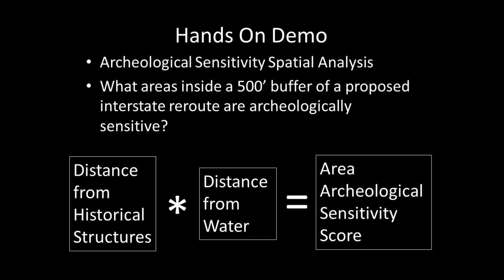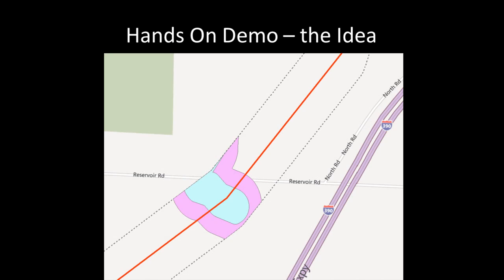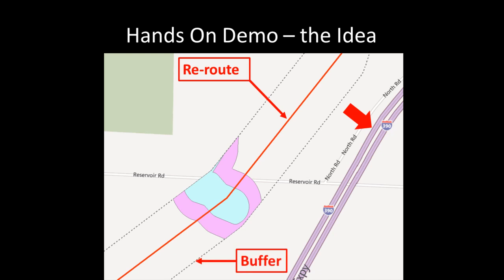This image shows an example of the study area. The red line indicates where the proposed interstate reroute is being planned, in relation to the existing interstate to the east. The dotted line represents the 500-foot buffer around the proposed reroute of interest for the archaeological sensitivity analysis. The polygons represent areas determined to be archaeologically sensitive based on the spatial analysis and modeling. I'll also show how to create a basic elevation effect using raster techniques.